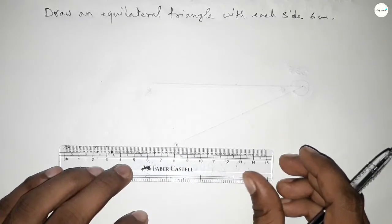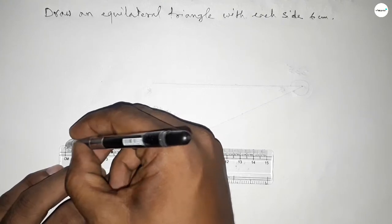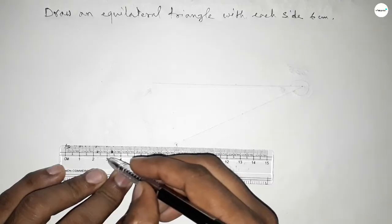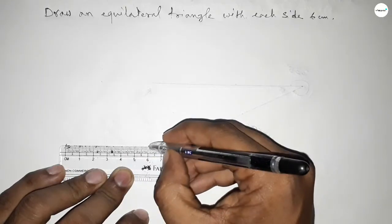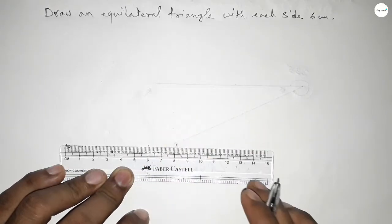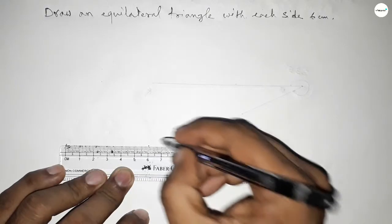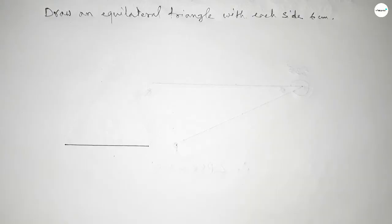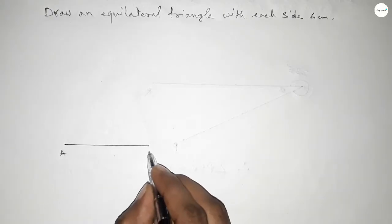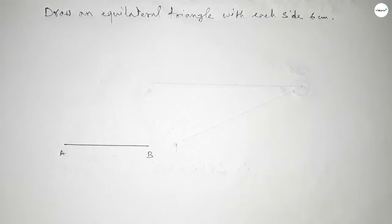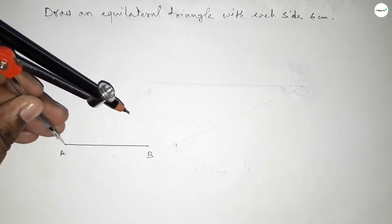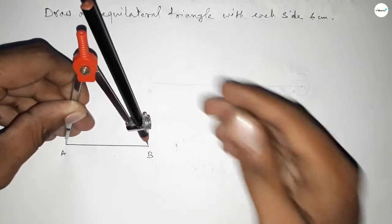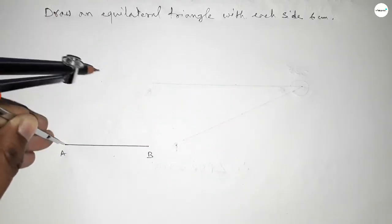First, drawing a line of length 6 centimeters by scale. Starting from zero, then one, two, three, four, five, six — this is 6 centimeters. This point is A and this is B, so AB equals 6 centimeters.